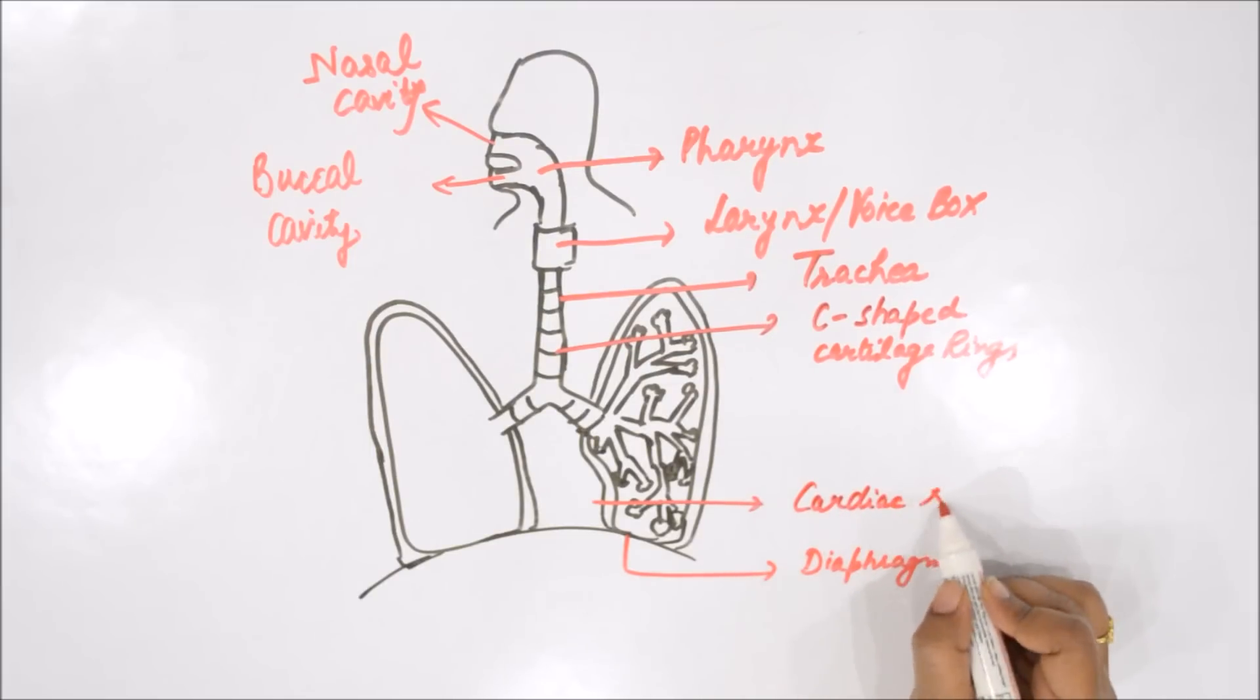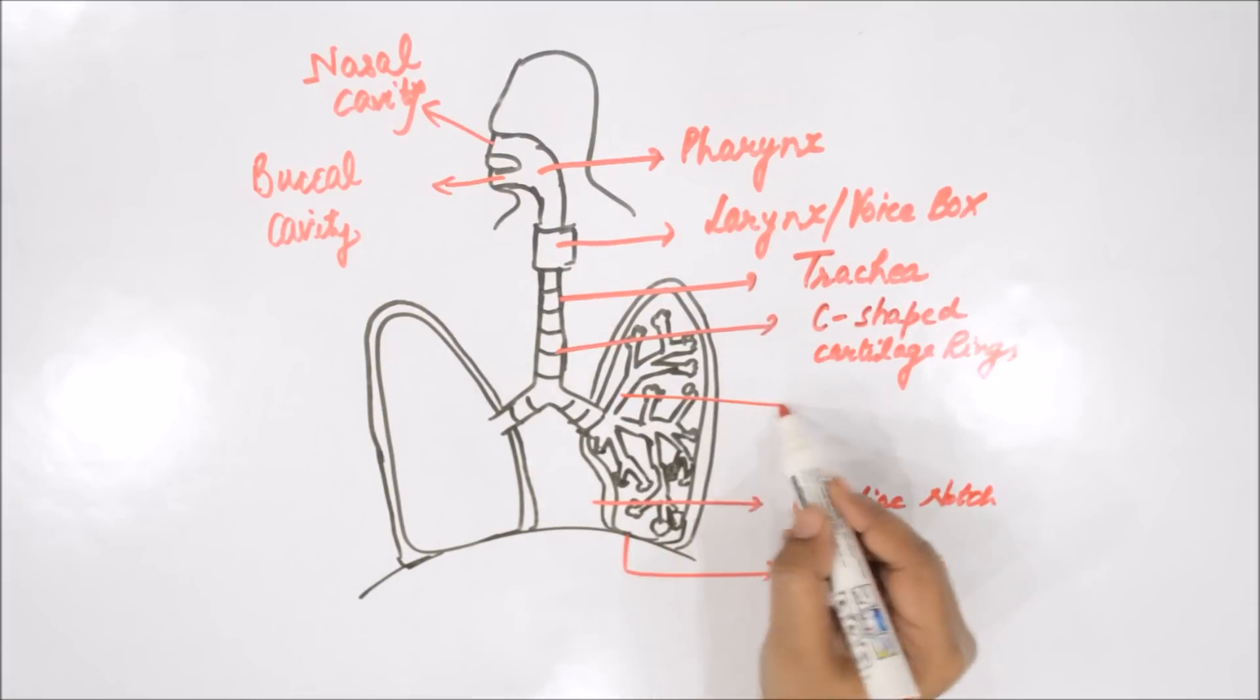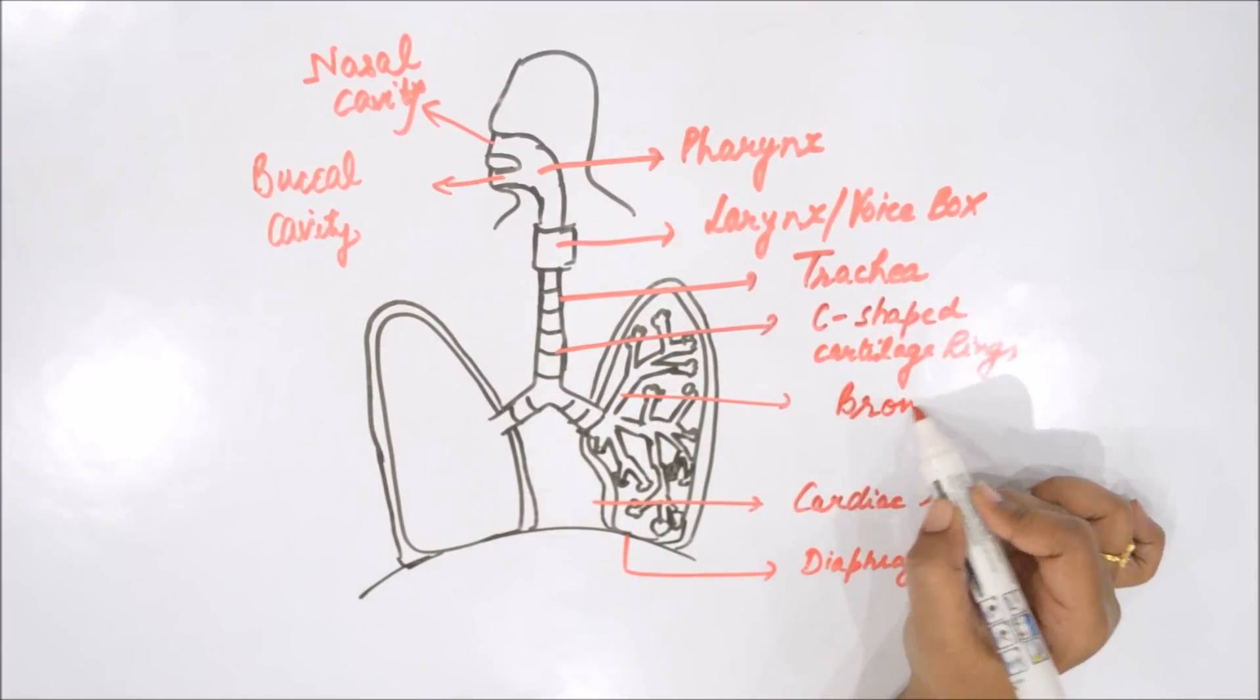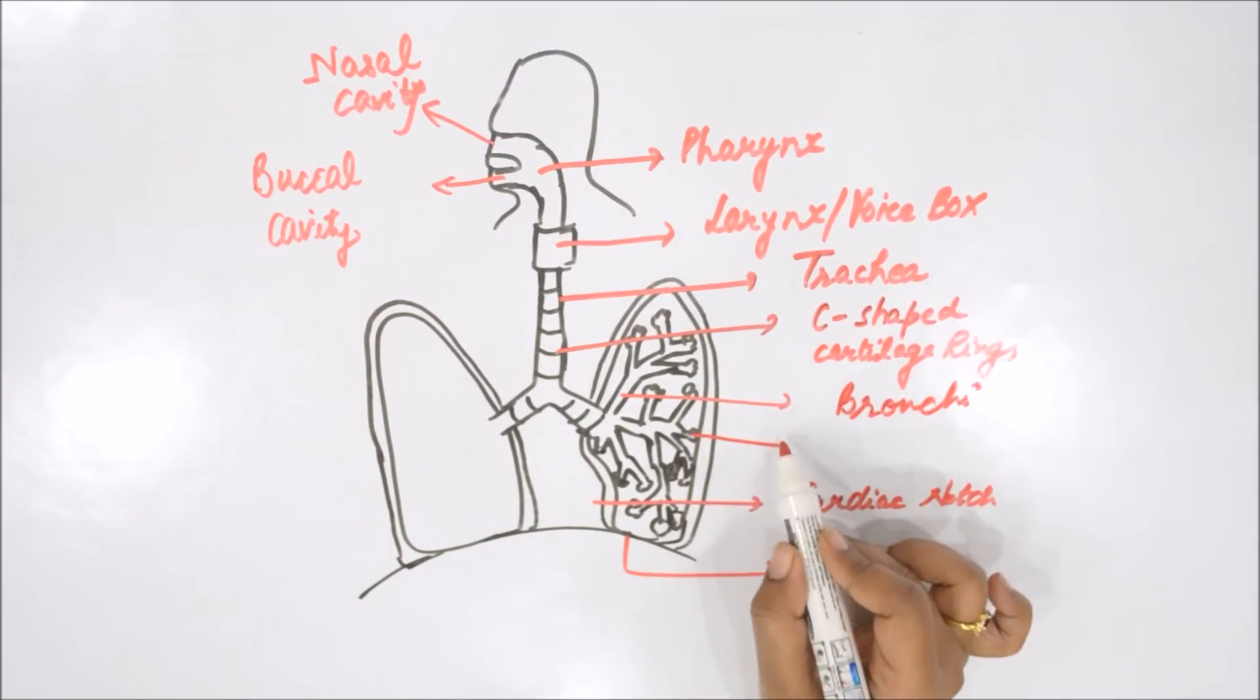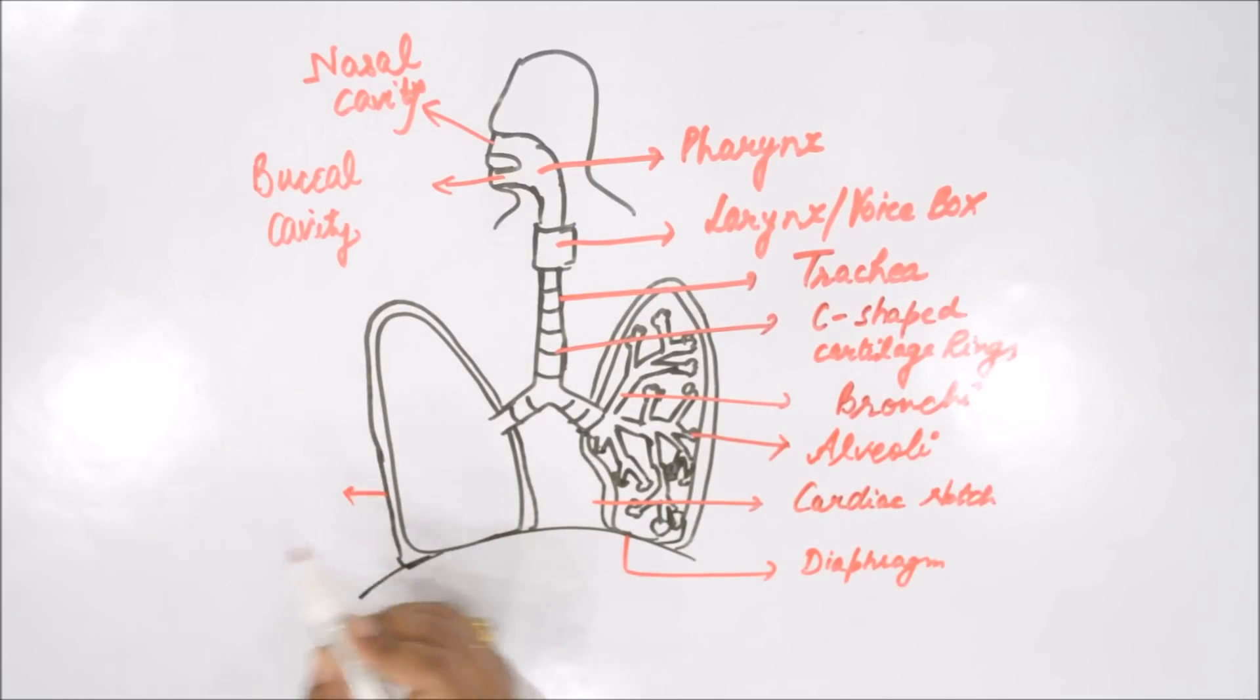This is the place for heart - cardiac notch, a notch in the left lung for the heart. These are your bronchi terminating into the balloon-like structure alveoli. Alveoli is a functional unit of lung where exchange of gases occur.